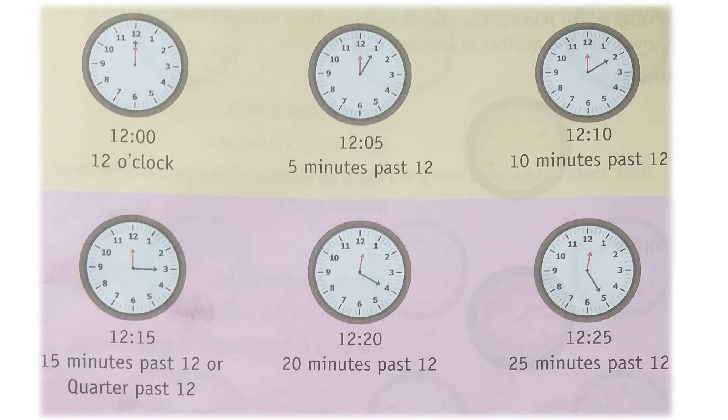So if the minute hand is at six, that means 30 minutes. In the next picture, the hour hand is at 12 and the minute hand is at five. Five more minutes have passed. You multiply 5 by 5 — five fives are 25. So the time is 12:25, or 25 minutes past 12.